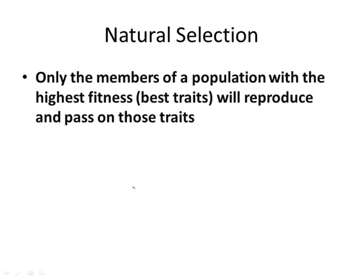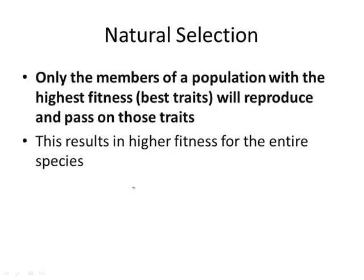Natural selection means that only the members of a population with the highest fitness — the best traits or adaptations — will reproduce and pass on those traits. Over a long period of time, this results in a higher fitness for the entire species, because only those will survive and reproduce. In the end, all the lions will be quite fast runners.